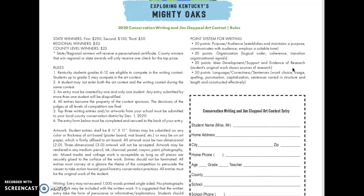The last 30 points is for language and correctness of sentences. This includes word choice, usage, spelling, punctuation, capitalization, and sentences that are varied in structure and length and constructed effectively. When you wrote for me last week, I asked you to write in complete sentences — but some of those were not complete sentences. A complete sentence must have a subject and a verb. Some of you need to work on capitalization, punctuation, or spelling. If you do not punctuate, capitalize, spell, and write complete sentences, that is 30 points off your essay. The highest you could make would be a 70 if you are having problems with that.